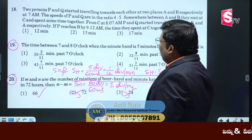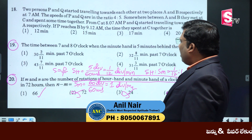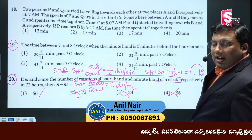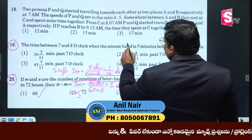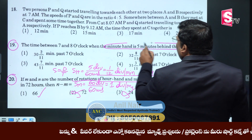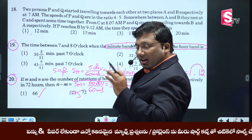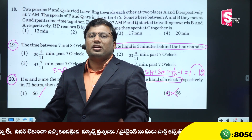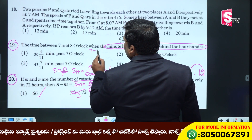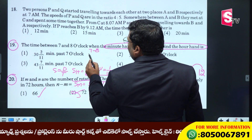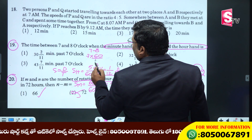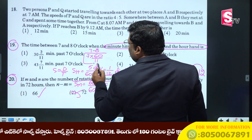The time between 7 and 8 o'clock when the minute hand is five minutes behind the hour hand — a student asks: 'Sir, why do you need to solve this question correctly?' Between 7 to 8 o'clock, when the minute hand coincides, the formula is 7 into 60 by 11.